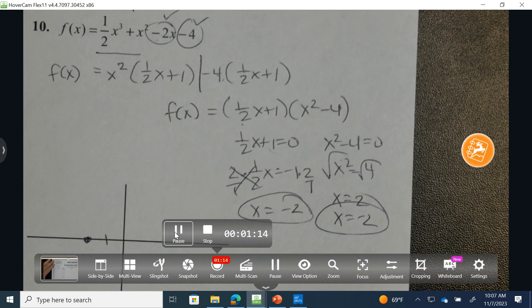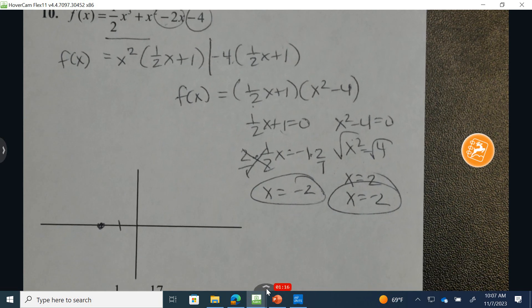But notice I have a double solution at negative 2. That means it's going to bounce off.